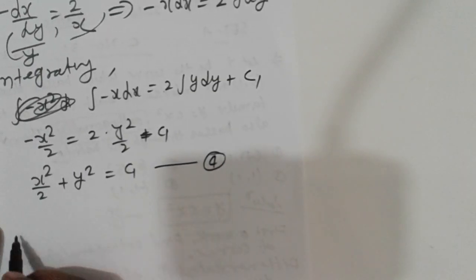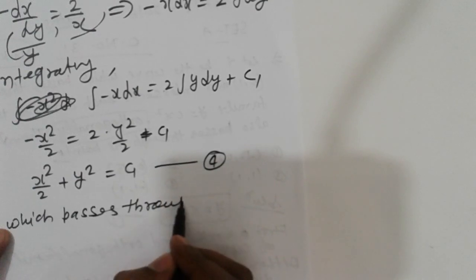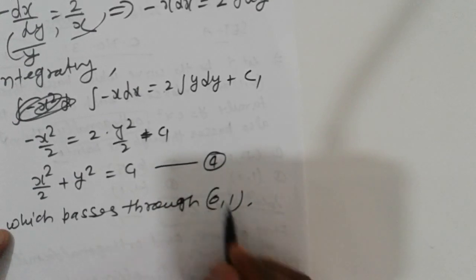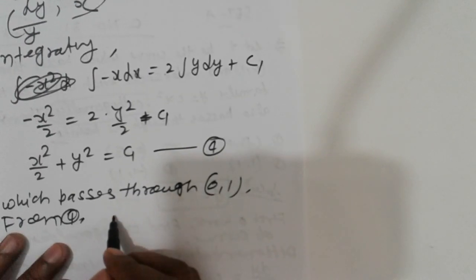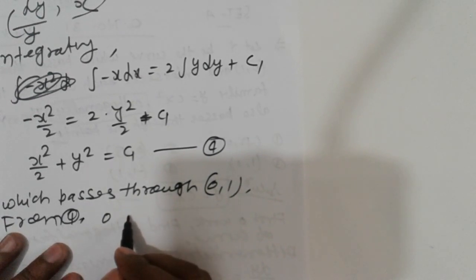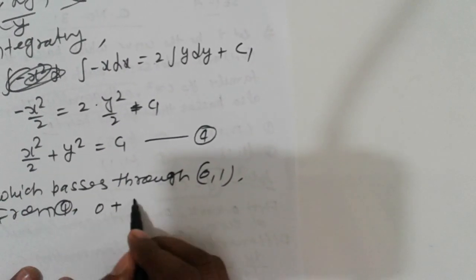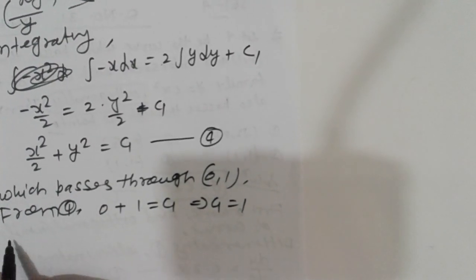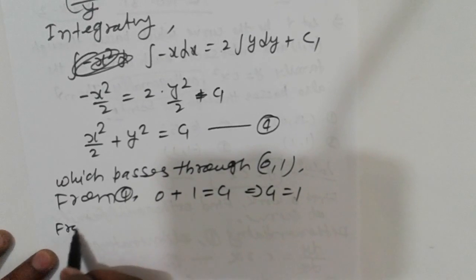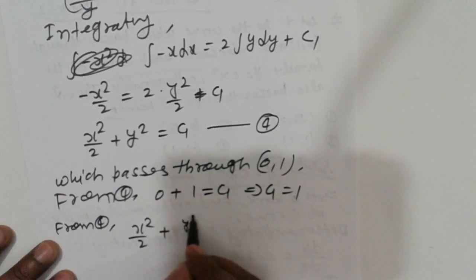Since the curve passes through (0,1), substitute into equation 4. Putting x = 0 and y = 1, we get 0/2 + 1 = c1, which implies c1 = 1. So from equation 4, we get x²/2 + y² = 1.